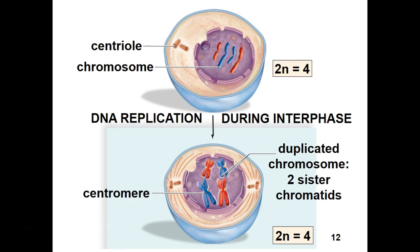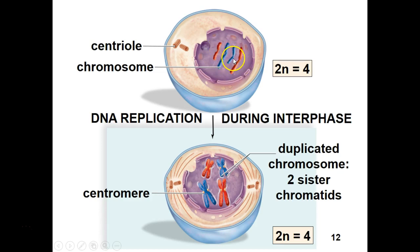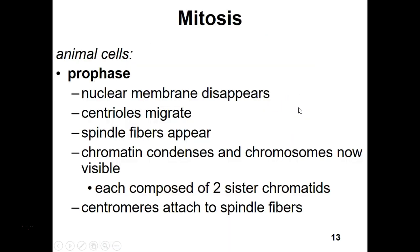DNA replication occurs during interphase at the S phase, or synthesis phase. The parent cell goes through interphase and each chromosome replicates. So if we had four chromosomes total — two pairs — after replication we have four chromosomes each consisting of two sister chromatids, giving us eight chromatids total. Then we go through prophase of mitosis.